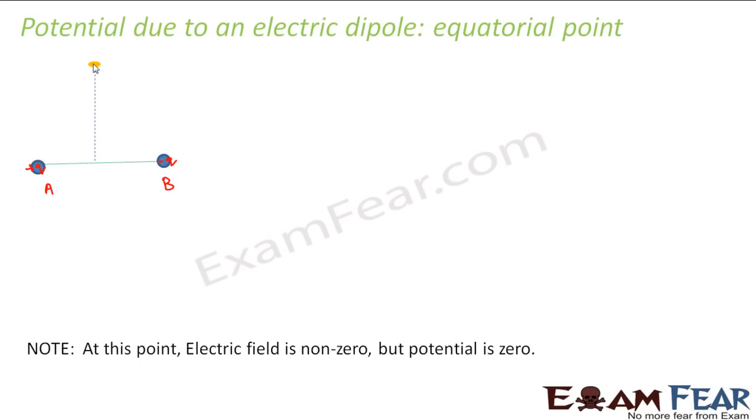So the equatorial point is this point, let us call this point as P. The equatorial point is the one which lies on the perpendicular bisector of the dipole. So we have to find out the potential at this point P. Now the distance between the charges is 2a, therefore this is a, this is a, because this is the perpendicular bisector.